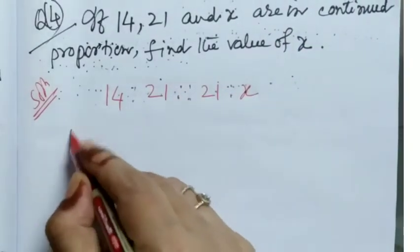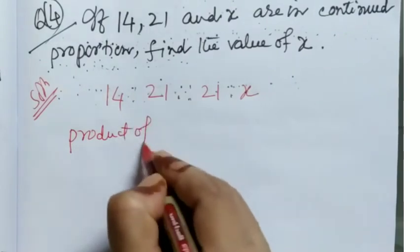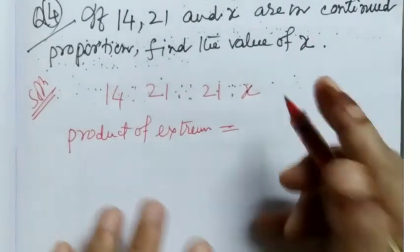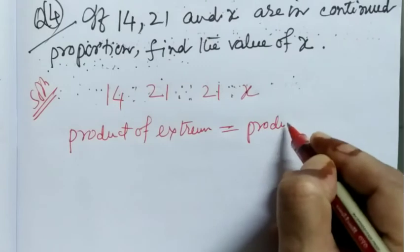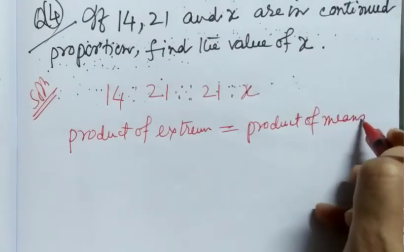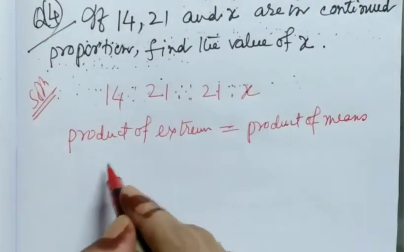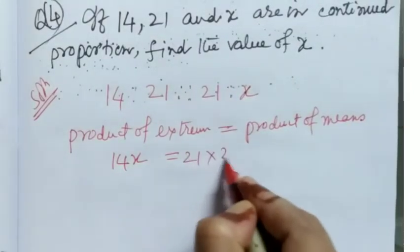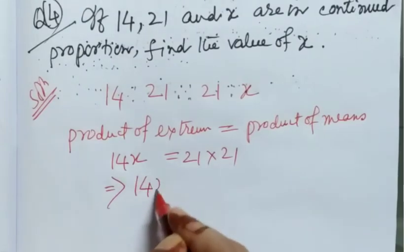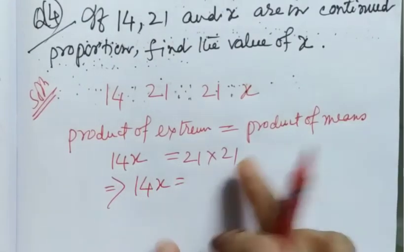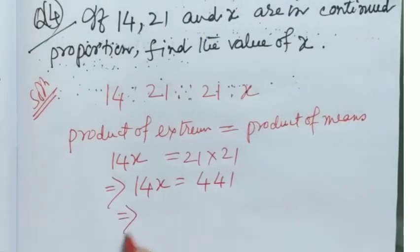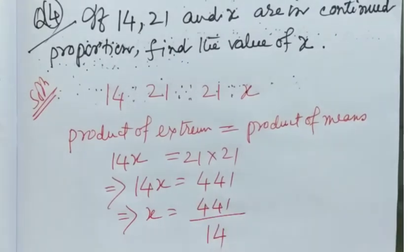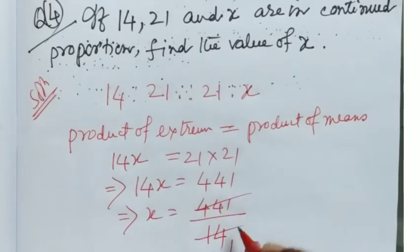Either by using the formula or fact which we know, product of extremes is equal to product of means, or directly by calculating value of x from this. Now I am following the formula. When 4 terms are in proportion, then product of extremes is equal to product of means. Now here, extreme terms are 14 and x. Therefore 14 into x is equal to means are 21, 21. That means 21 into 21 implies 14x is equal to 441.